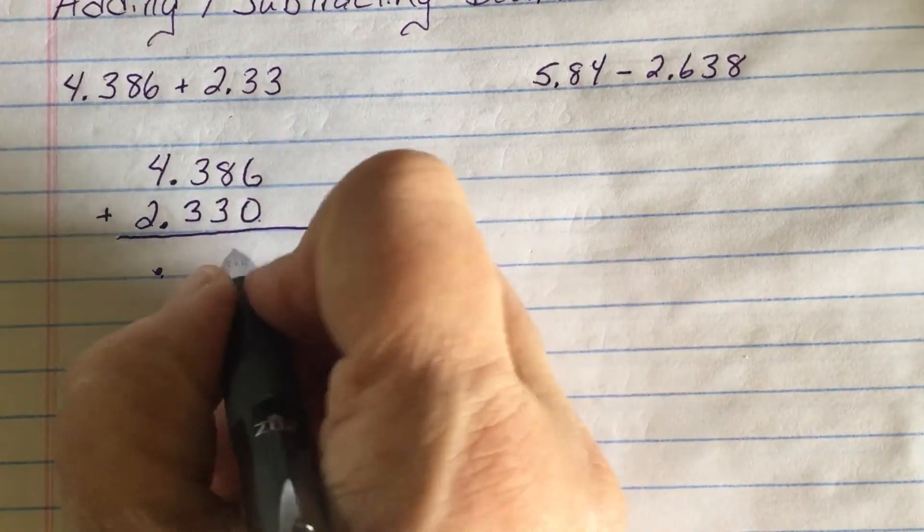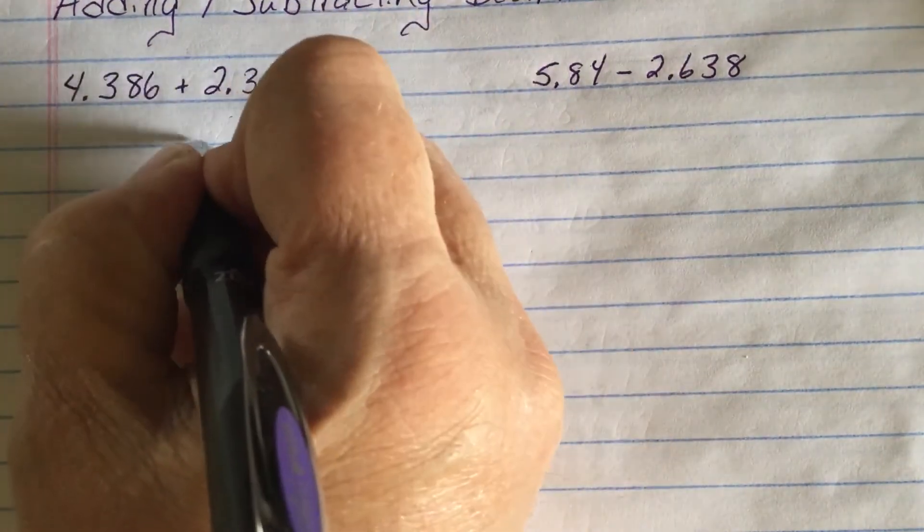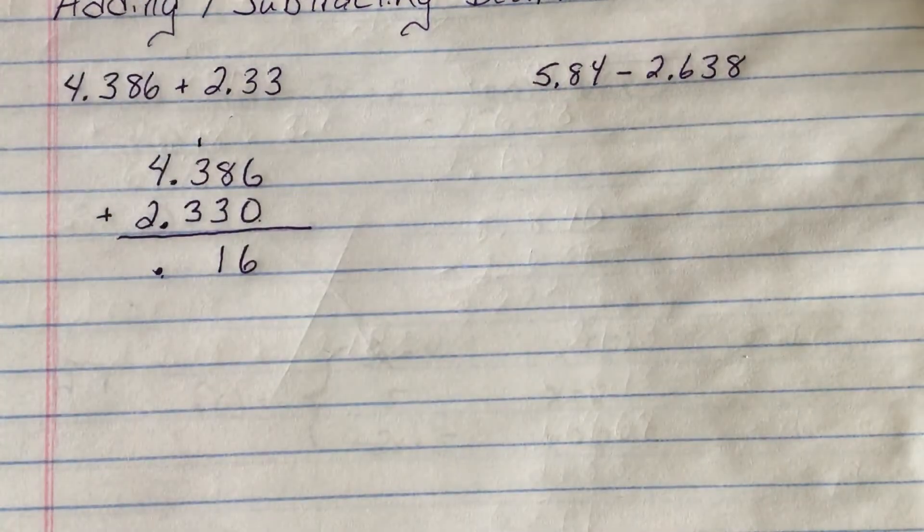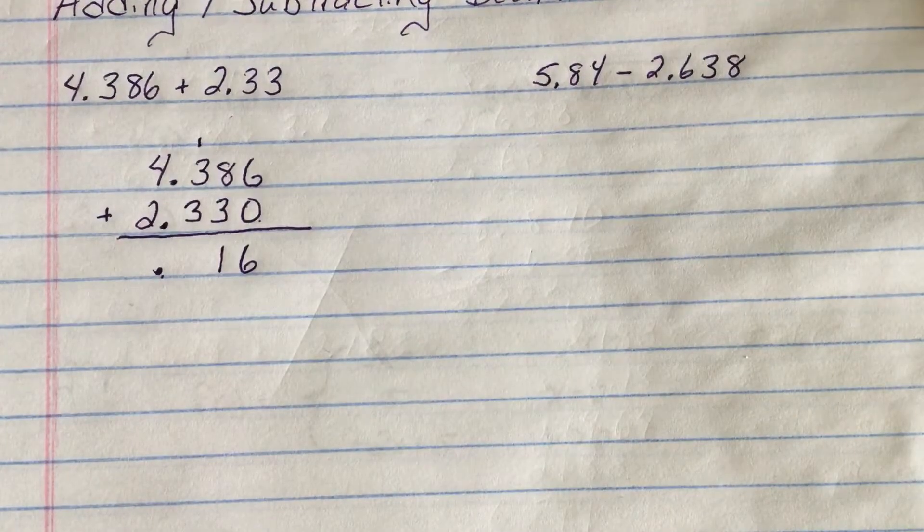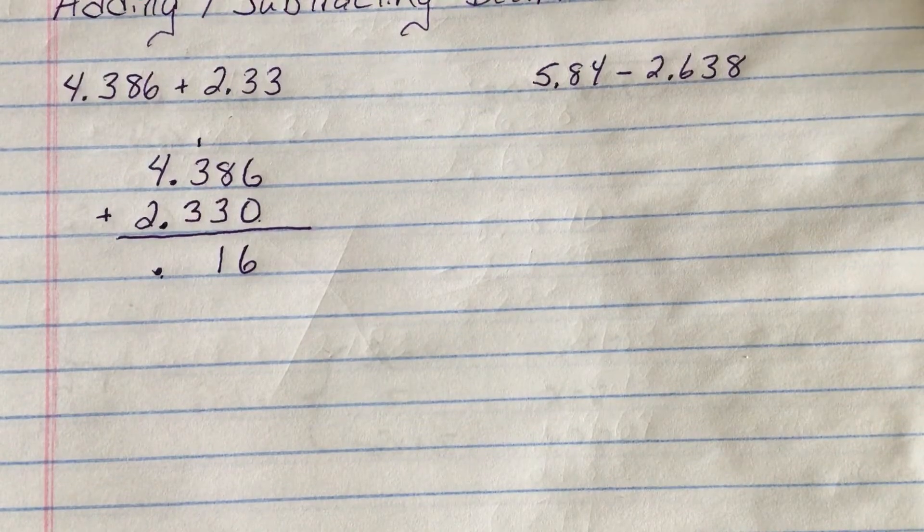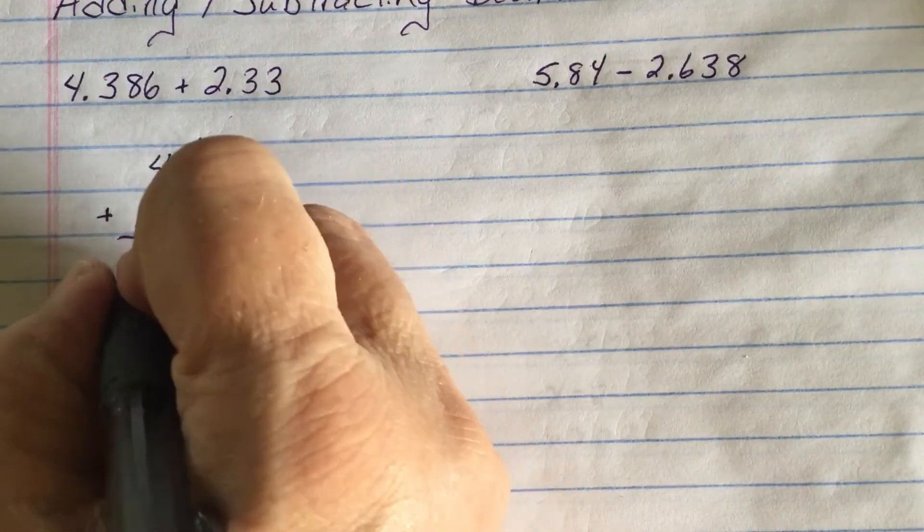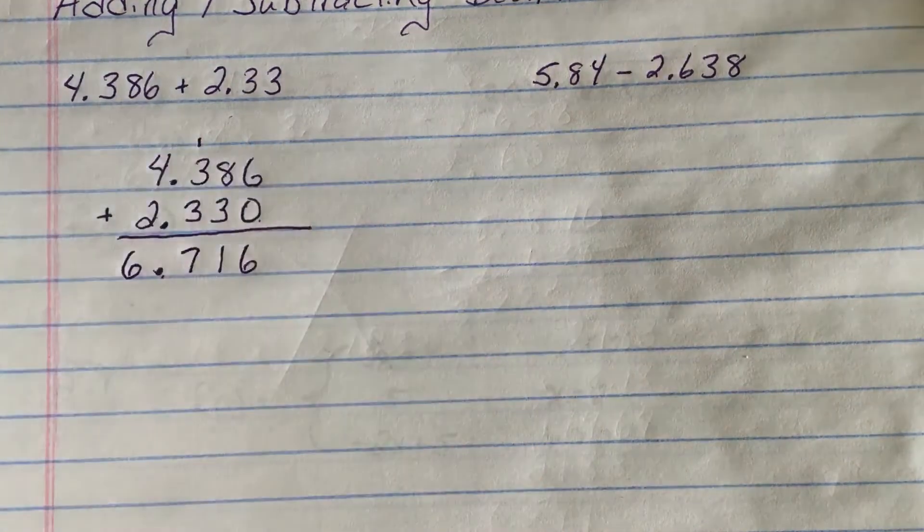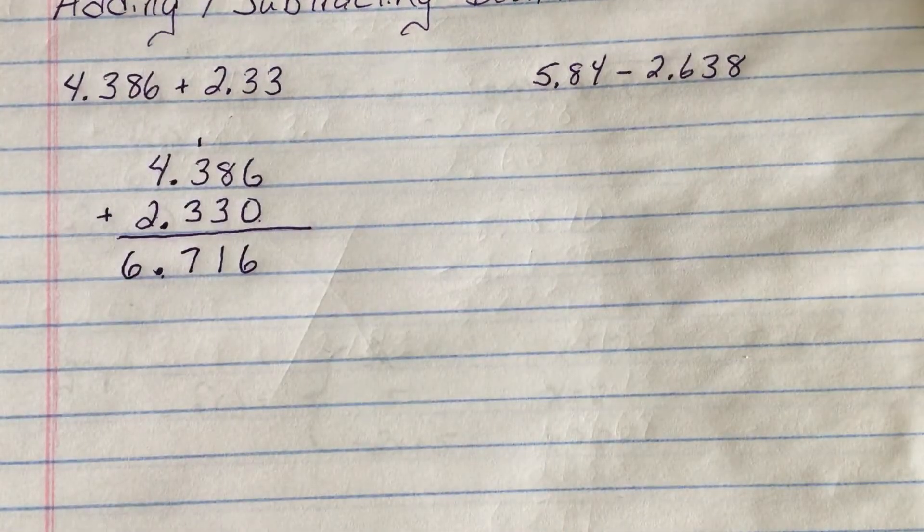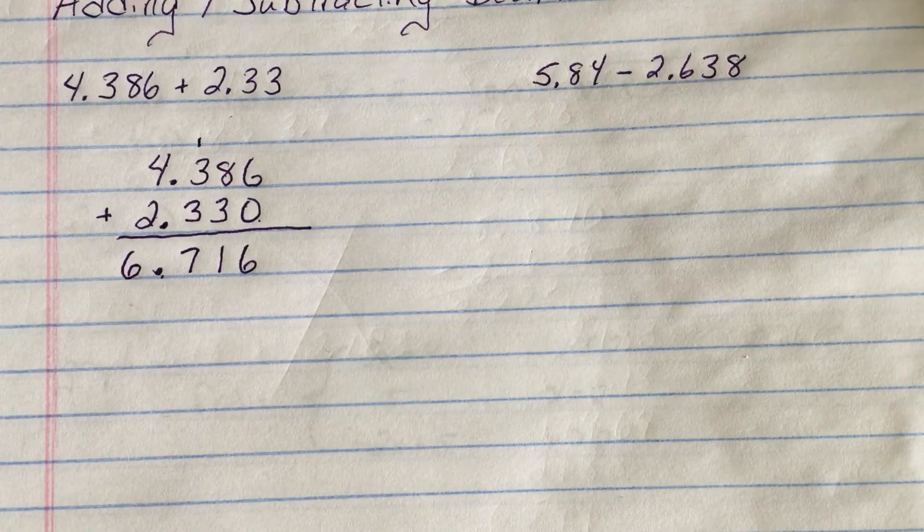Six plus zero is six. Eight plus three is eleven. I carry the one. That one's really a ten because it's ten and one. One plus three is four plus three is seven. Four plus two is six. Six point seven one six is the answer for four point three eight six plus two point three three.